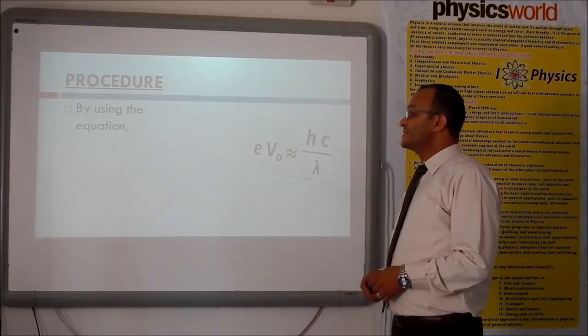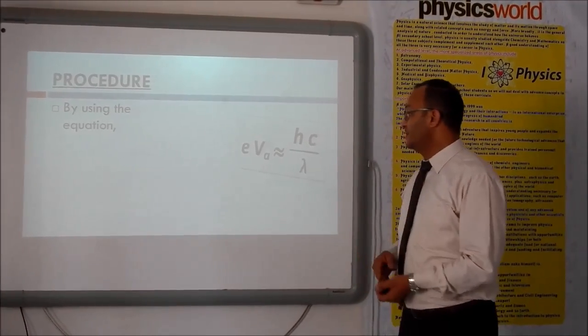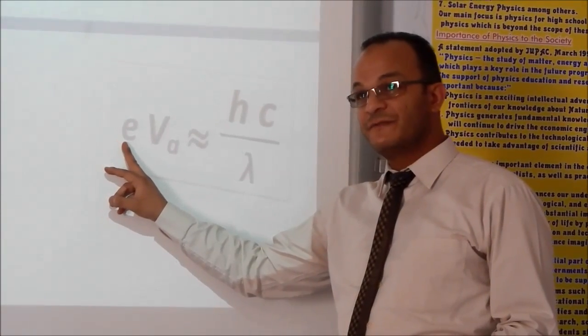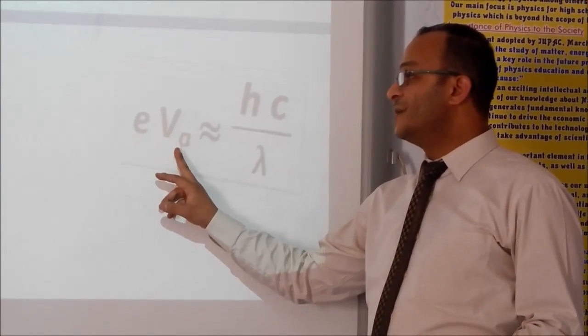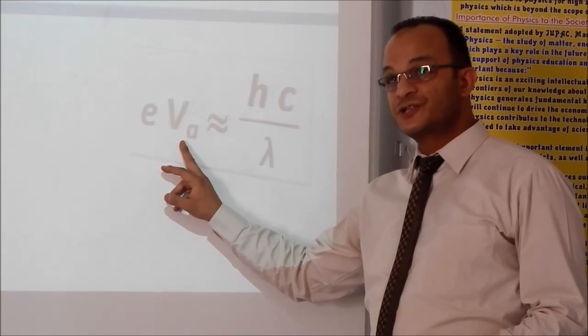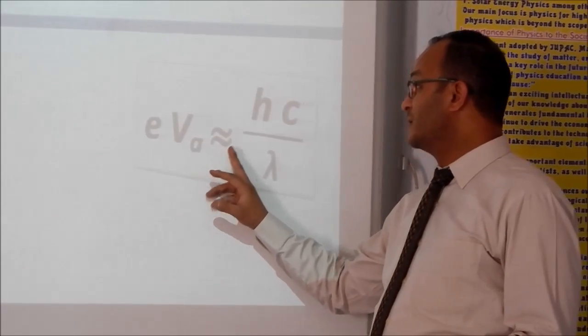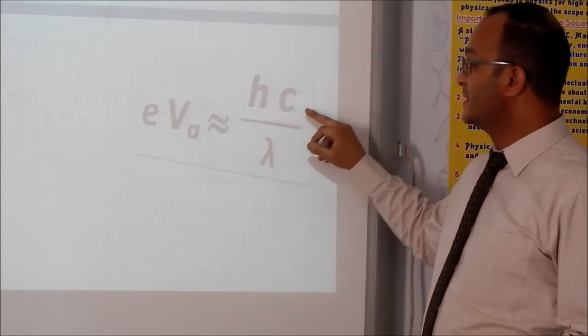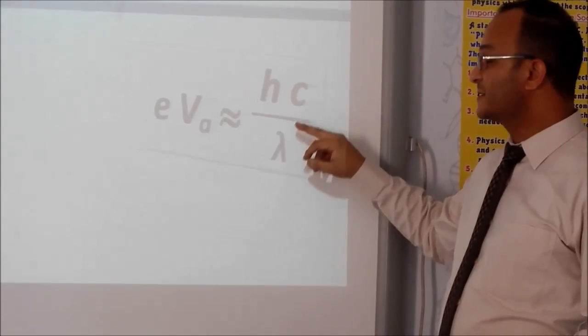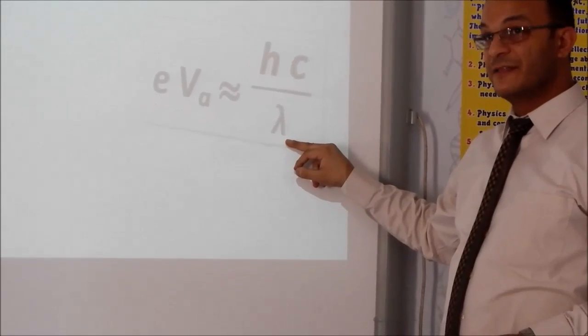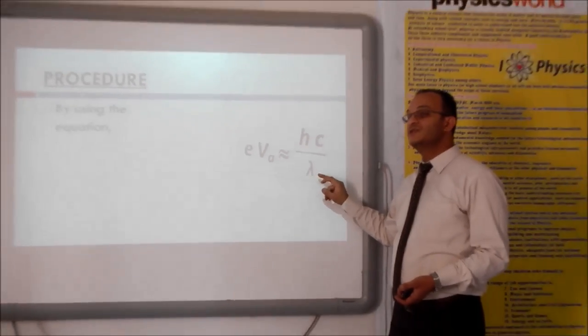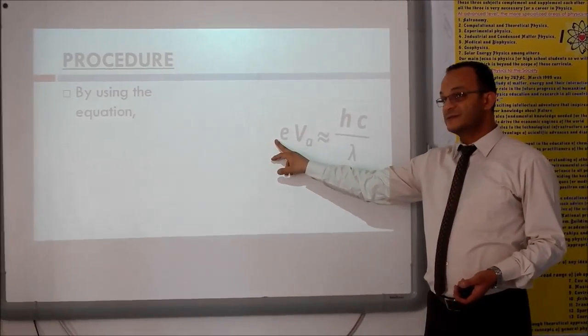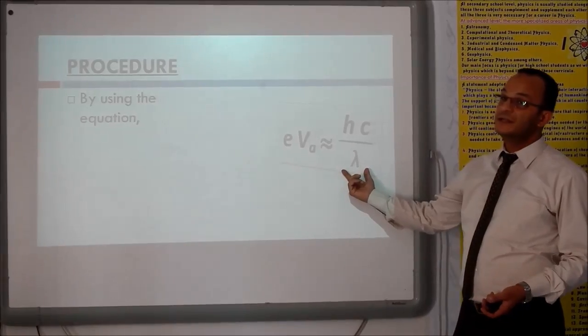By using this equation, which says that E, which is the charge of the electron, multiplied by the activation voltage will almost equal H, which represents Planck's constant, times C, speed of light, over the wavelength. This is the piece of information that we need to calculate. By knowing all the values, you can determine the wavelength.